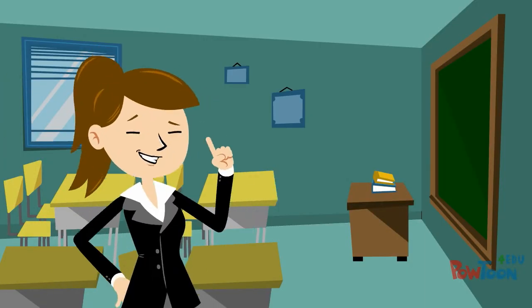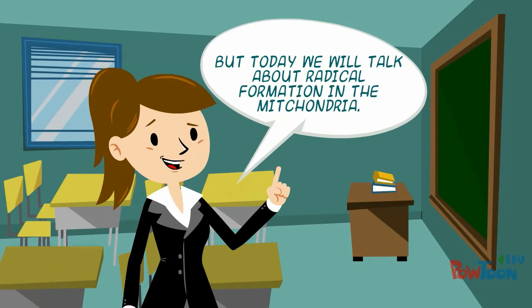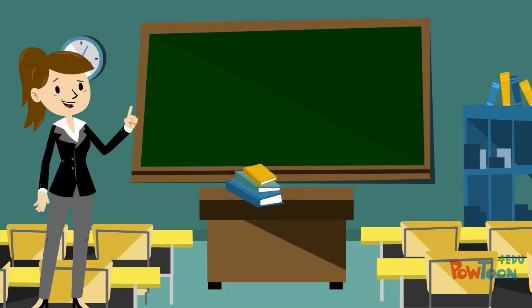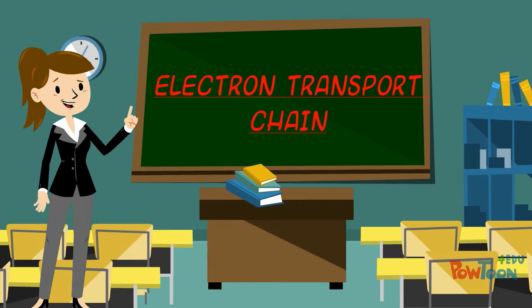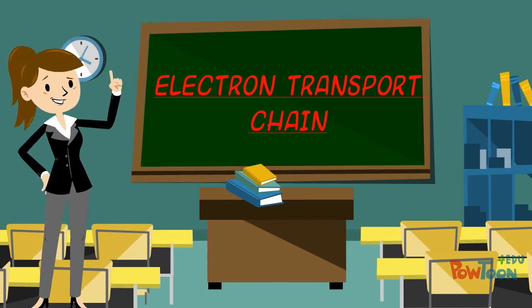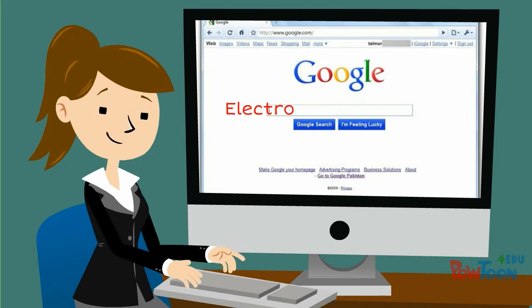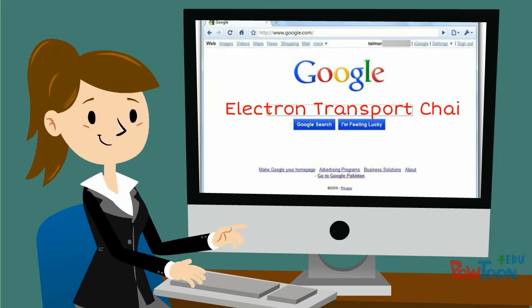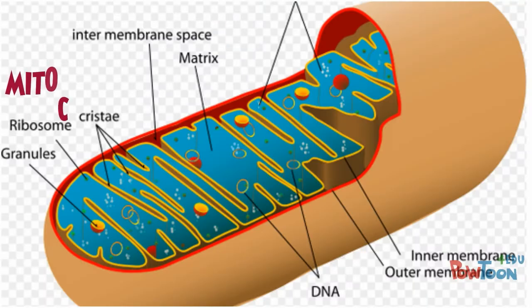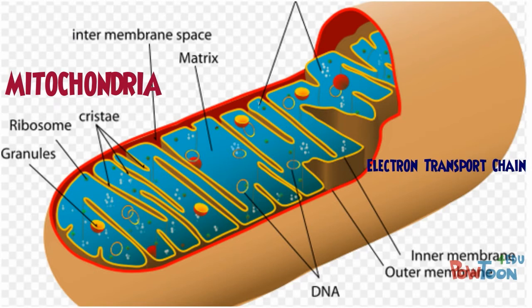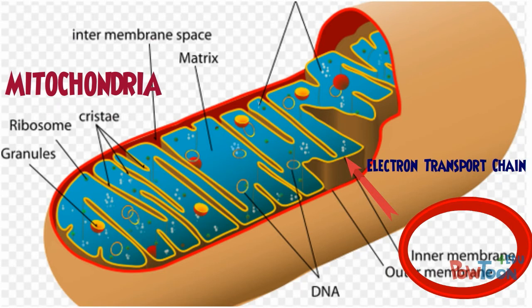But today, we will talk about radical formation in the mitochondria. We will focus particularly on the electron transport chain located in the mitochondria of the cell. Let's try and Google to find out more about the ETC. The electron transport chain is embedded in the mitochondria within its inner membrane space.